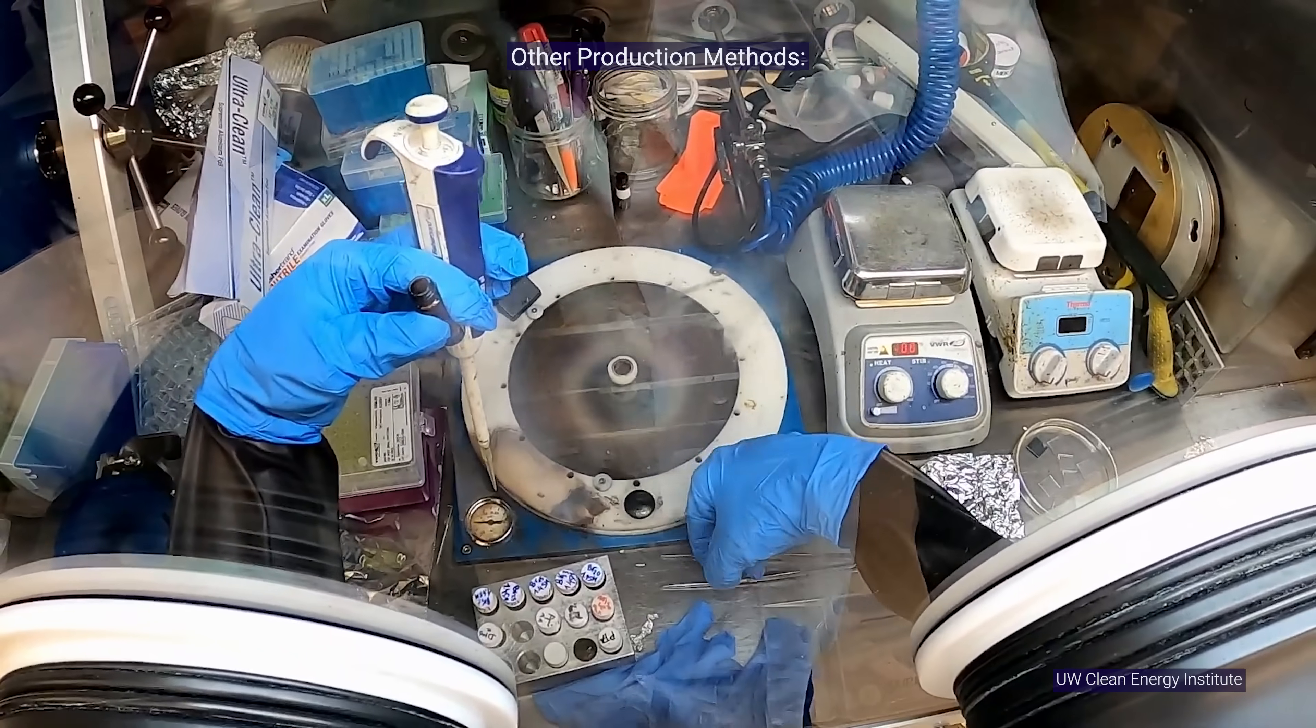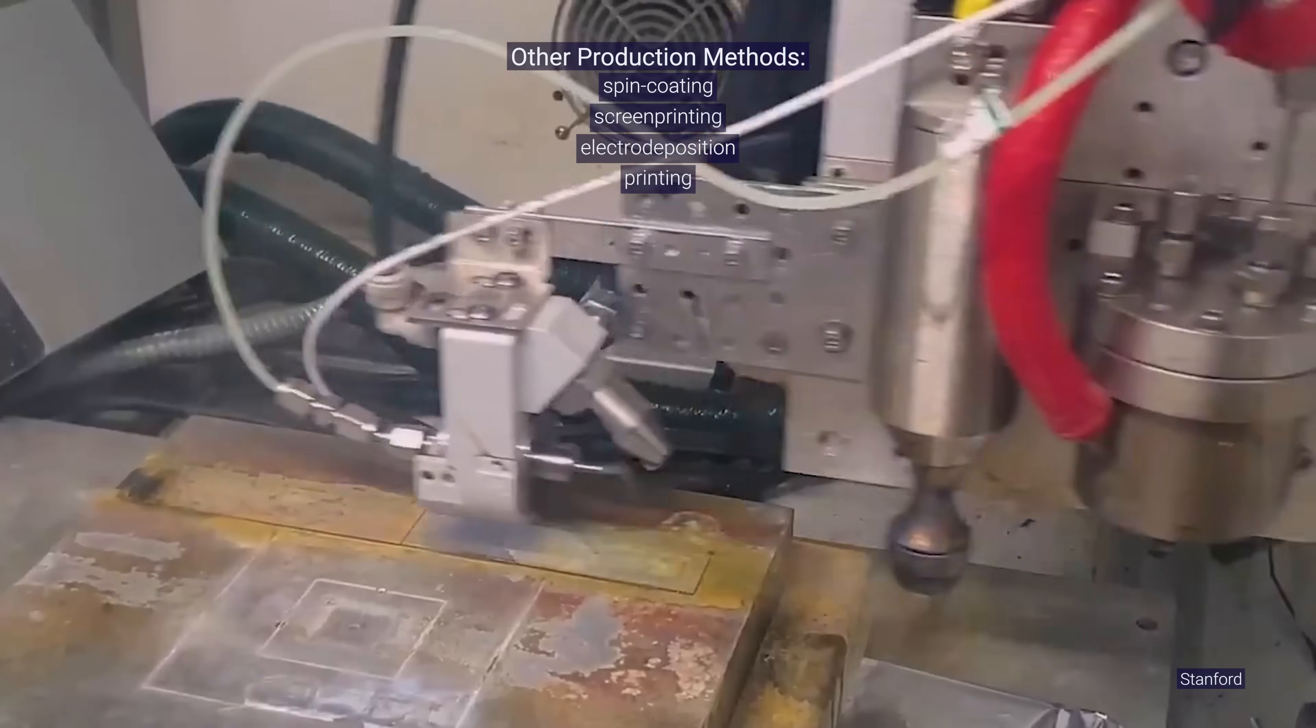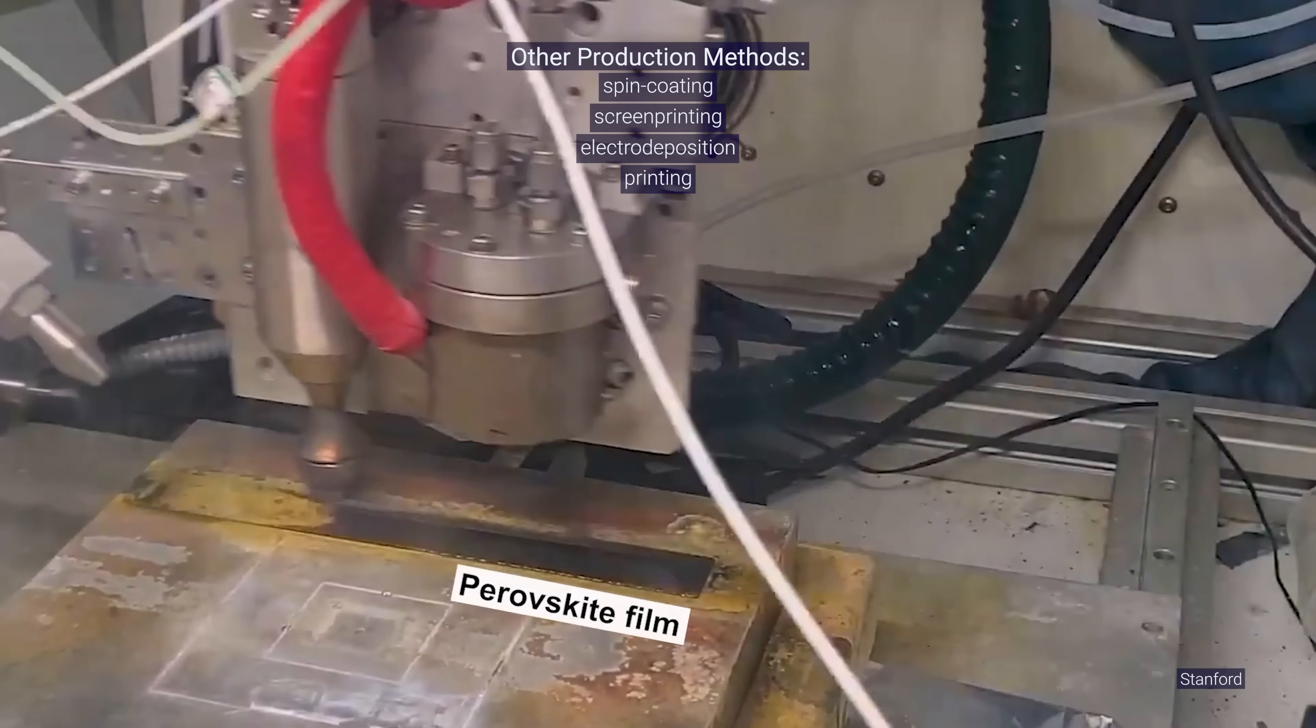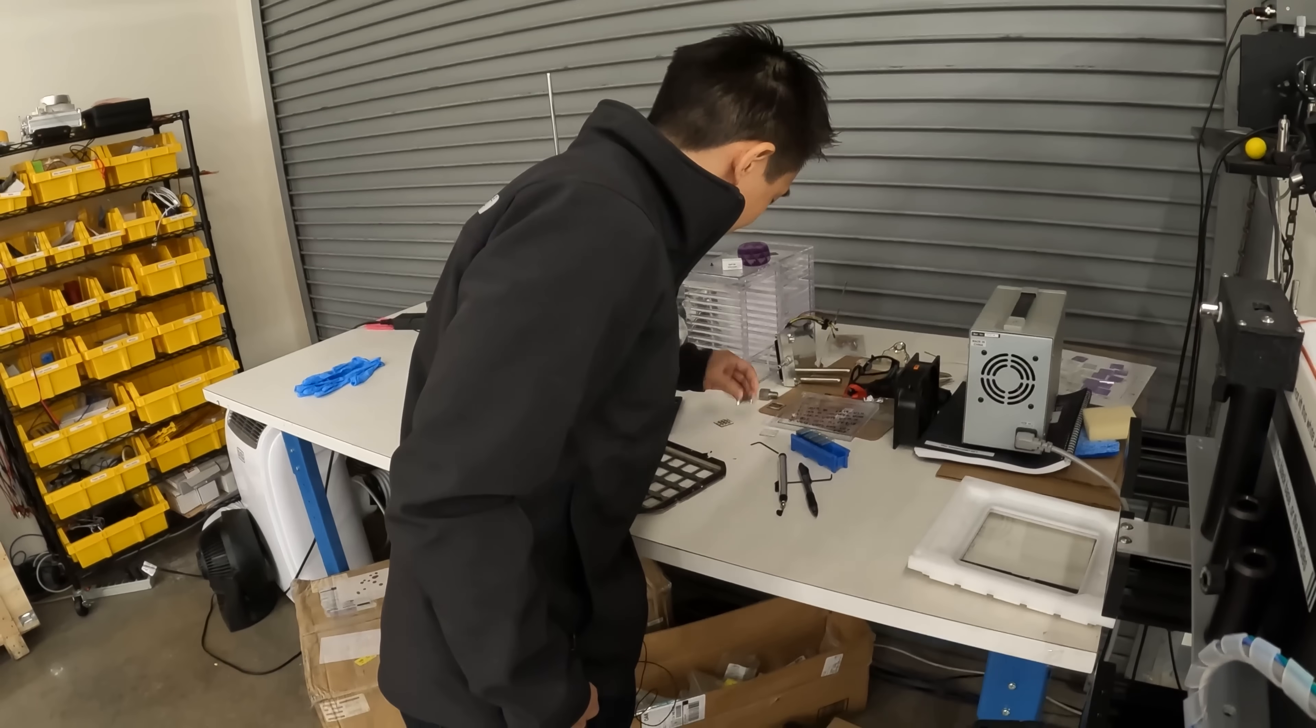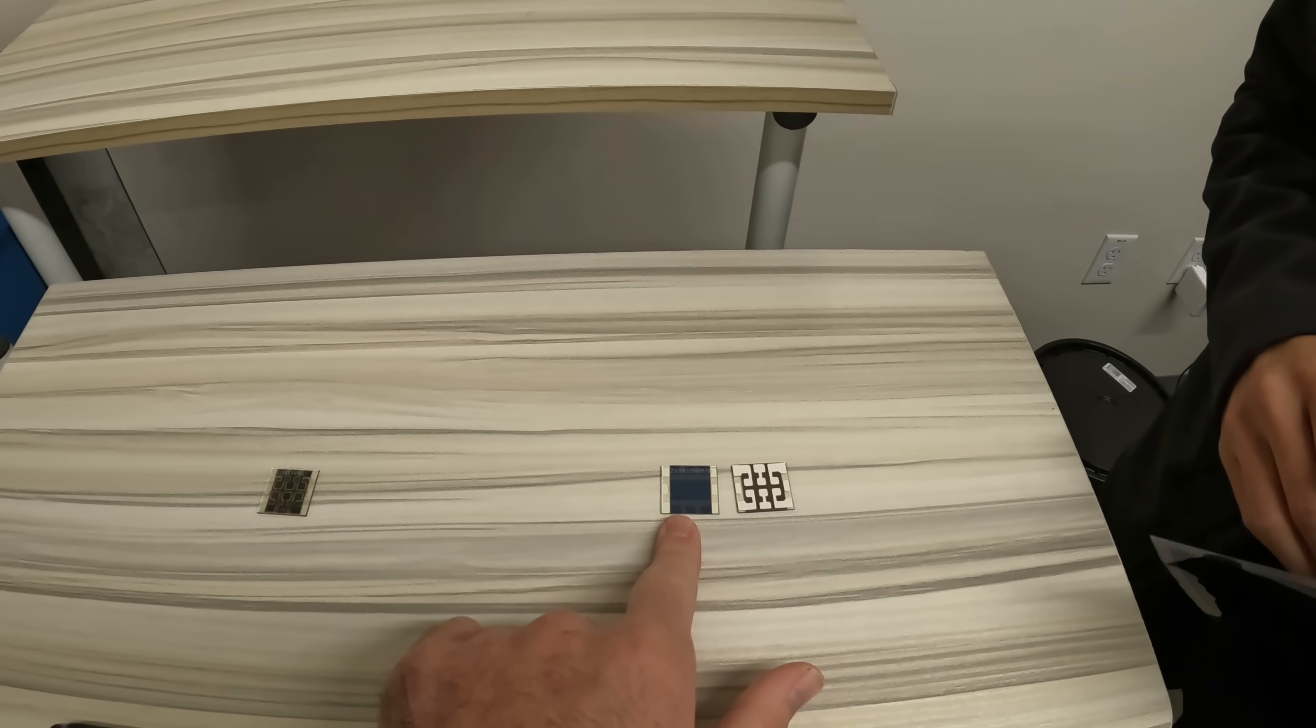You can also make perovskite cells with spin coating, screen printing, electrode deposition, or even printing the material on a sheet just like an inkjet printer. Here's the end result, a small rectangular perovskite solar cell. So this is the side that's facing the sun?